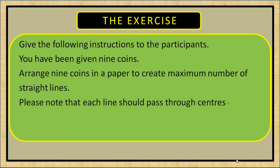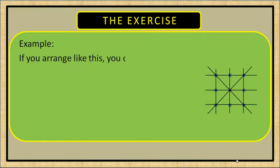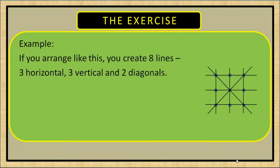Please note that each line should pass through the centers of three coins. Let us see an example. If you arrange like this, you create eight lines: three horizontal, three vertical, and two diagonals. Now let me give you a hint. Can you rearrange the coins to get at least ten lines?